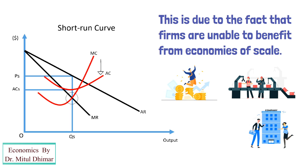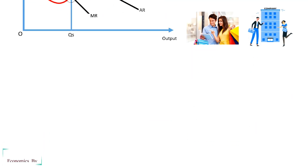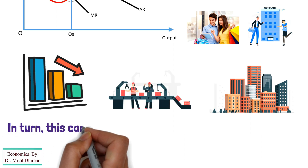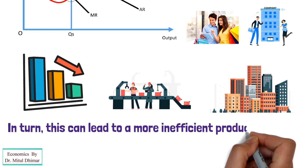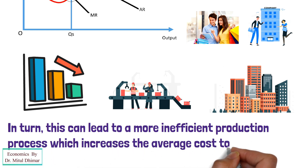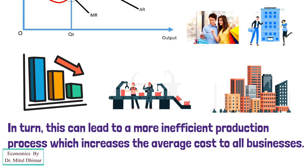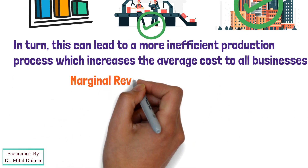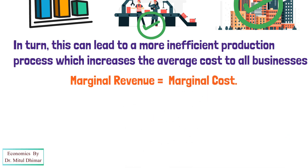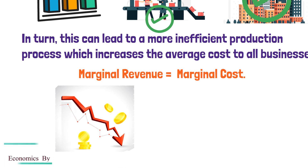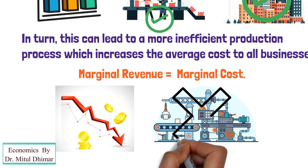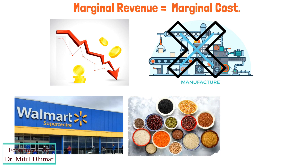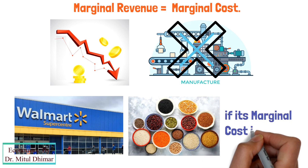However, when new businesses enter, they will take customers away, meaning the original firm will have to reduce production. In turn, this can lead to a more inefficient production process, which increases the average cost to all businesses. As with all profit-maximizing firms, they will continue to produce until marginal revenue equals marginal cost. This means that if it is no longer profitable to produce a product, then the business will not do so — for example, Walmart will no longer sell its cereal brand for $2 if its marginal cost is greater.